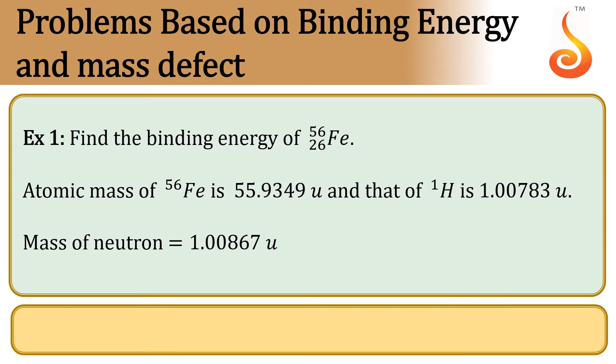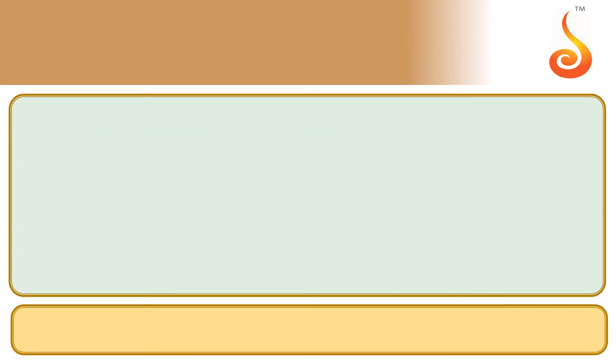We need to find the binding energy of iron. Let us see. The total number of protons in iron is 26 and number of neutrons in iron is 56 minus 26, which is 30.